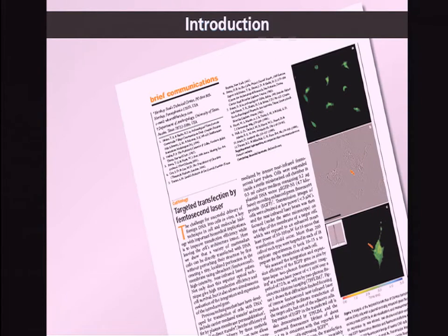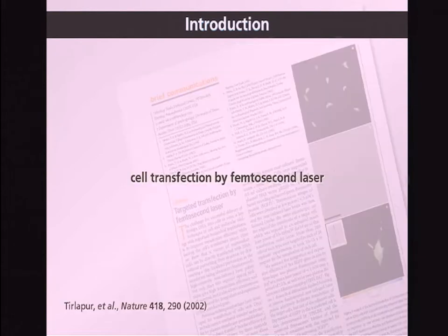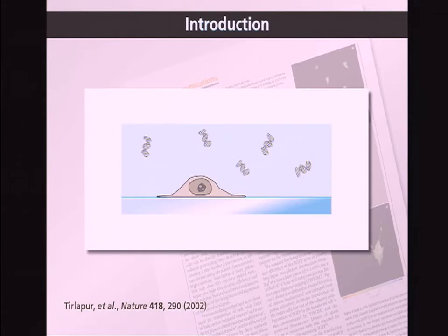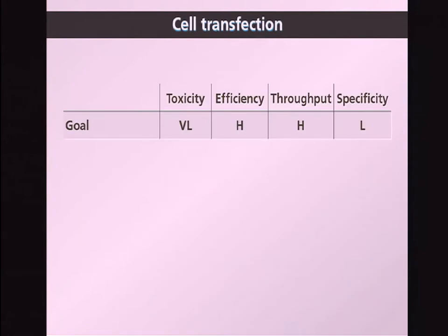These properties were first exploited a number of years ago by an earlier speaker tonight, Karsten Koenig's group, to obtain cell transfection — the incorporation of nucleic acid into a cell using femtosecond laser pulses. The idea is relatively simple: take a cell incubated in a solution that contains DNA, aim the femtosecond laser pulse at the membrane of the cell, and the high intensity disrupts the membrane, creating a hole through which the DNA can enter. Cell transfection is important for gene delivery and therapy, regenerative medicine, and the differentiation of stem cells.